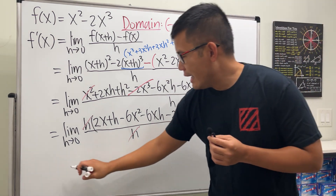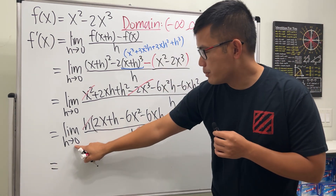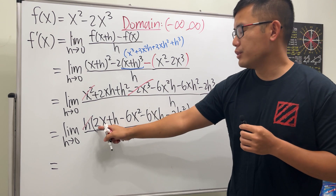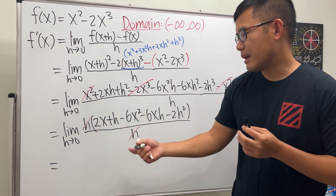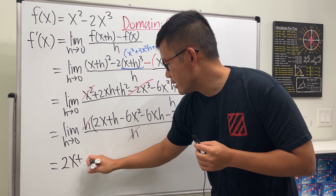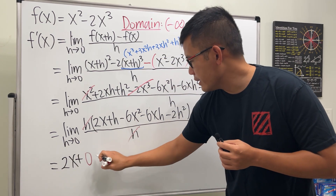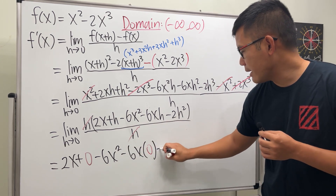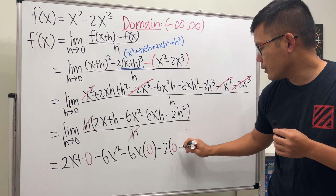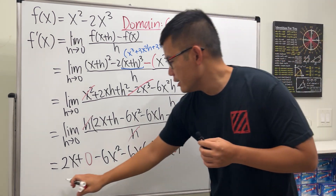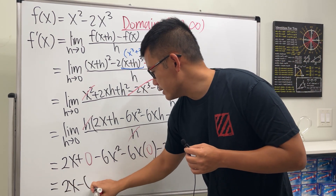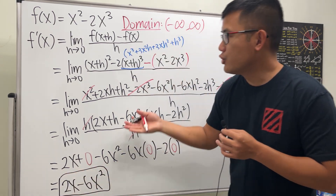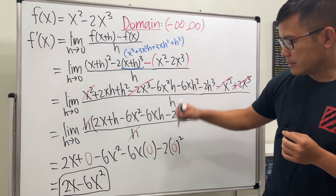Finally, we just put zero into all the h's. So we have 2x plus 0, minus 6x squared, minus 6x times 0, minus 2 times 0 squared. Now it's clear the answer is 2x minus 6x squared. That is the definition-based way to find the derivative for this particular function.